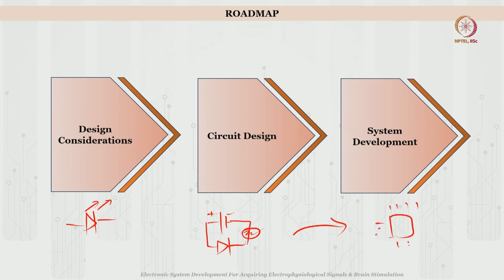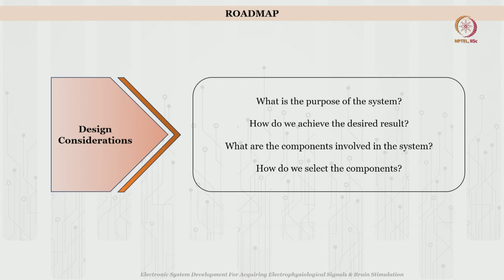This is the overall flow for this course, and I hope you will be able to understand and translate it onto your own applications. In design considerations, we will look at questions such as: what is the end goal or purpose of the system, how do we go about achieving this result, what components do we need to select, how are they involved in the system, and what parameters the components should have.